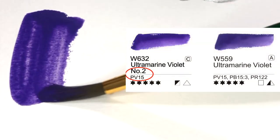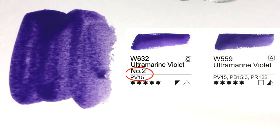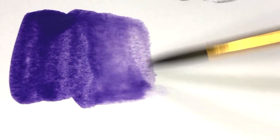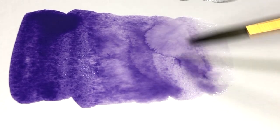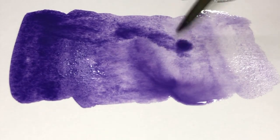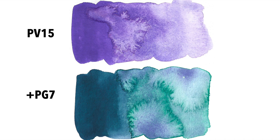Moving on to Ultramarine Violet, and this one is their single pigment PV15 called Ultramarine Violet No. 2. I don't normally mix a violet and a green, but I wanted to show you clearly, so I chose to mix it with Phthalo Green Blue shade PG7. And again, beautiful color separation right here.